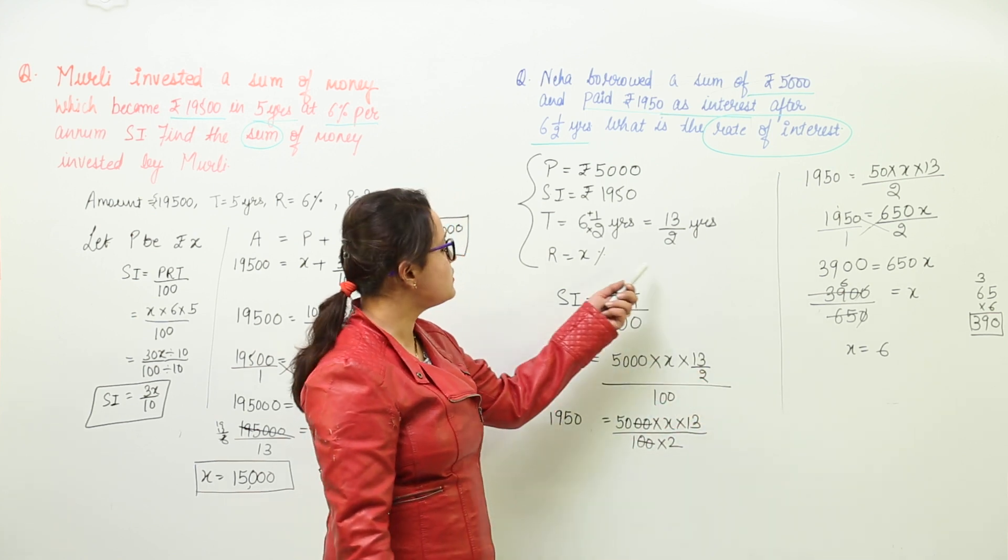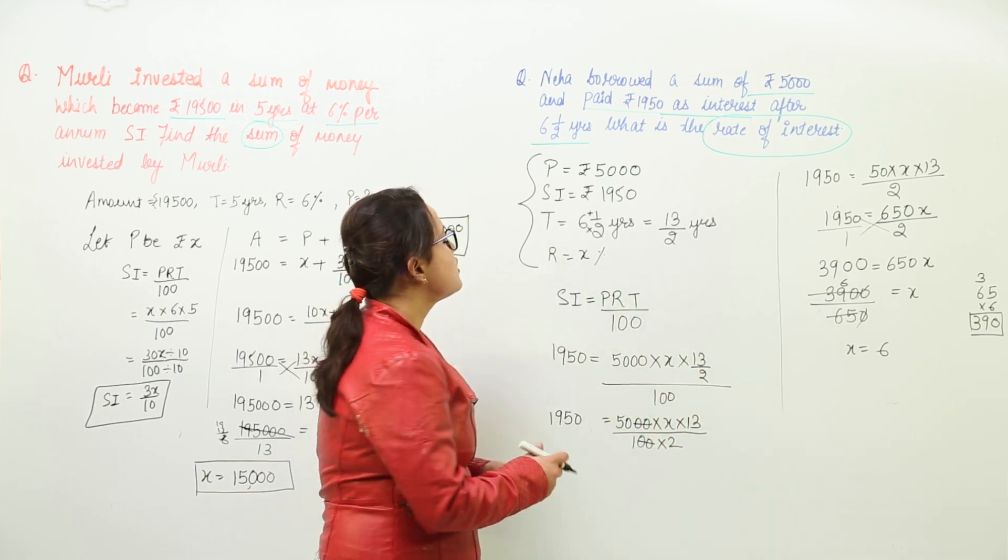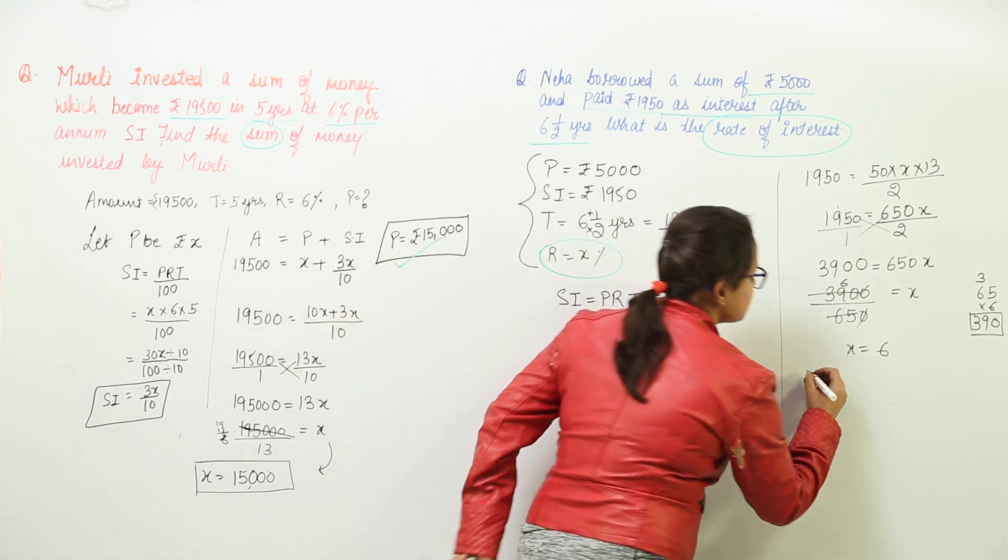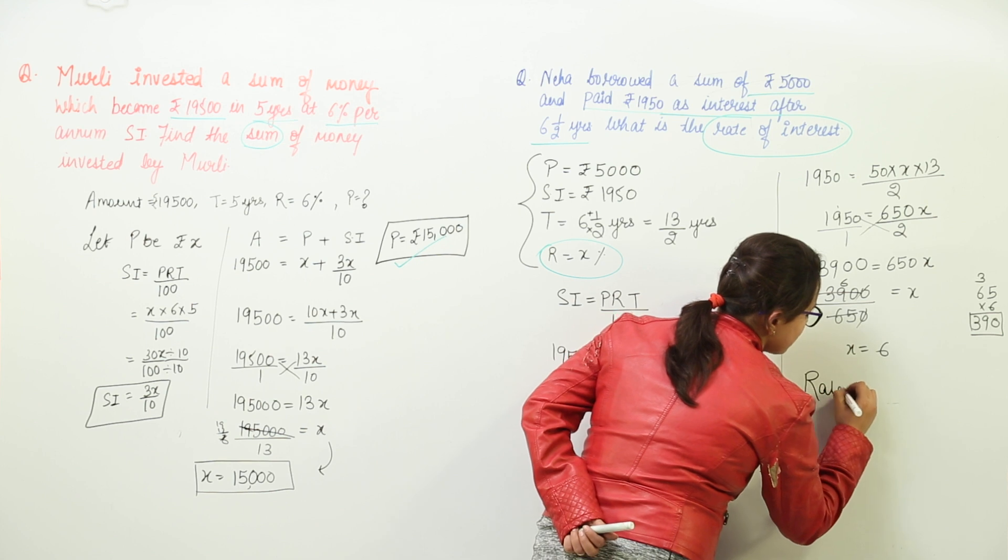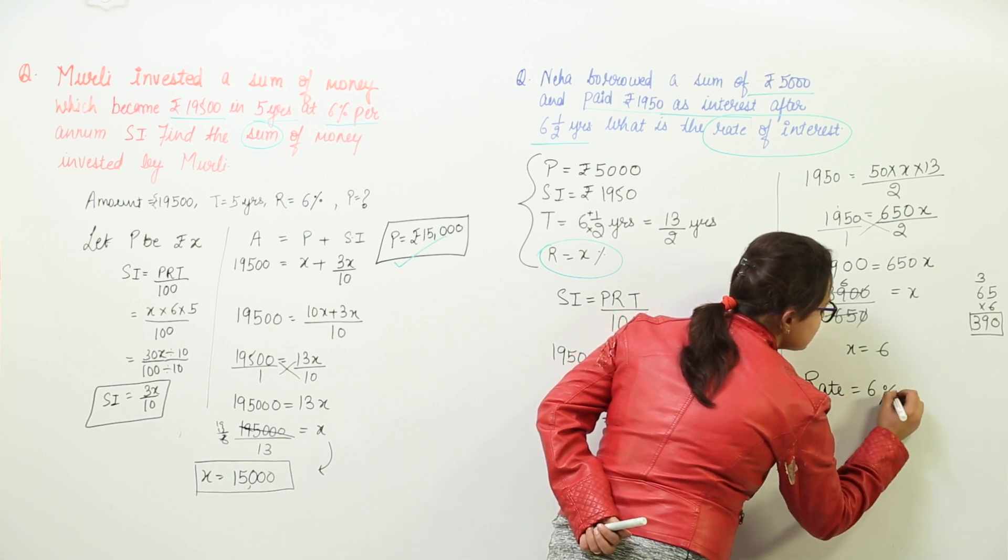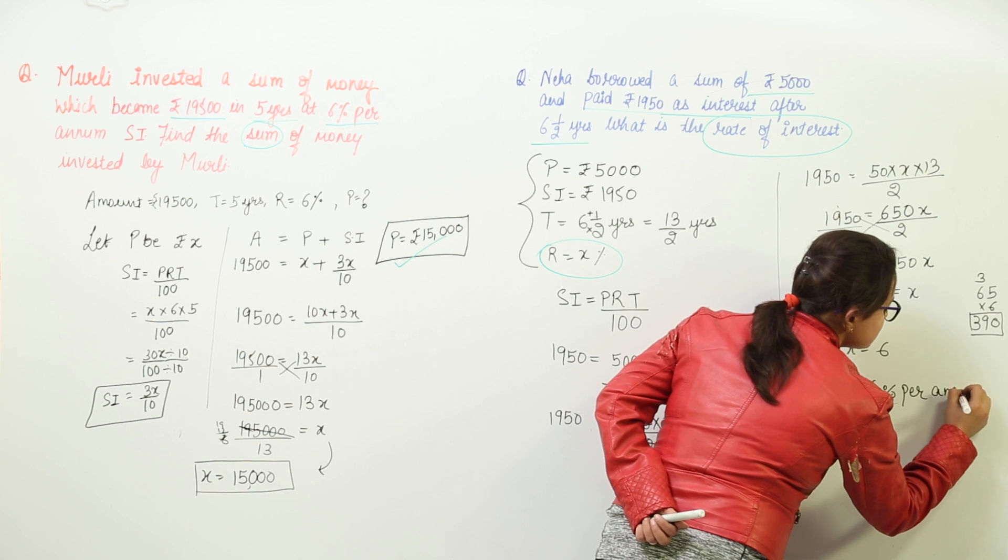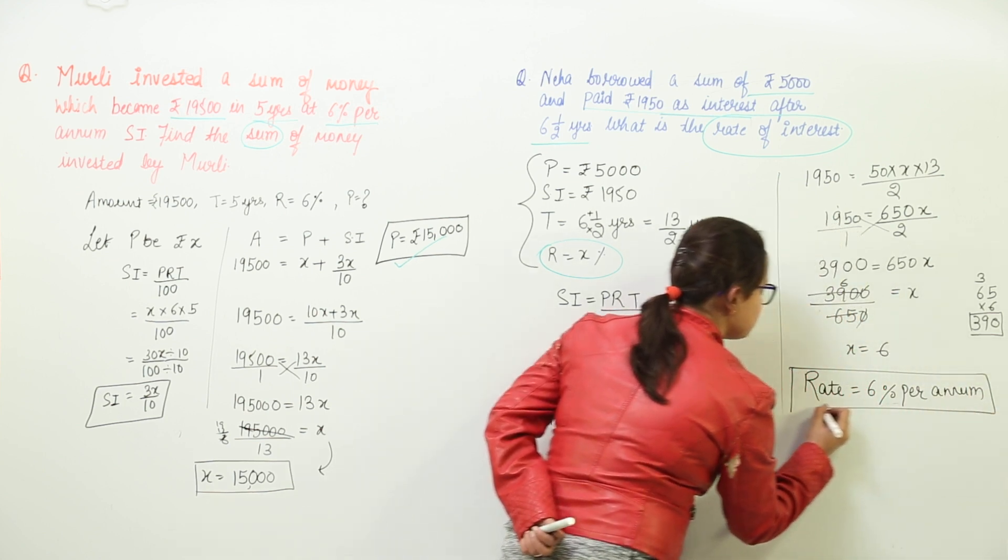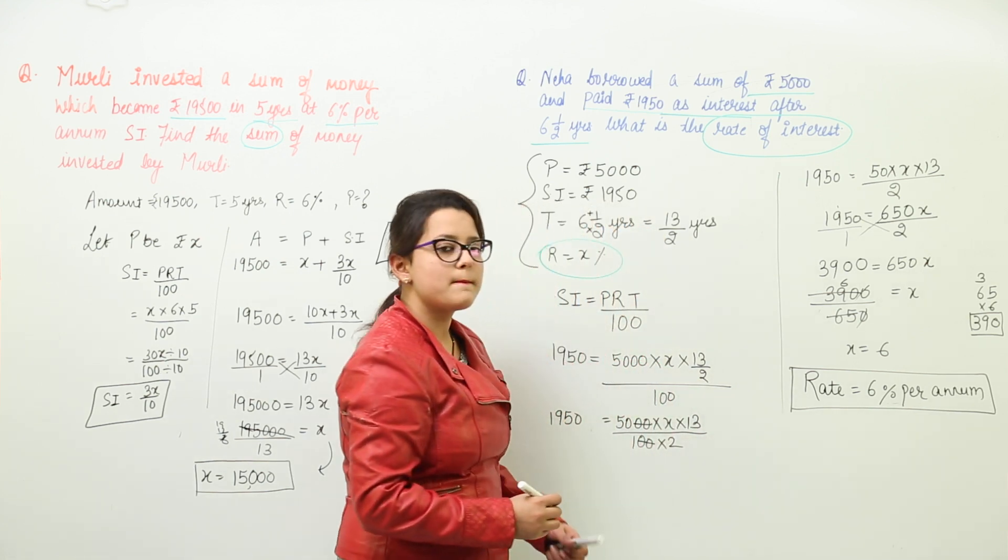We had assumed it to be the rate of interest so my rate of interest was assumed to be X therefore I get the rate of interest charged as 6 percent per annum because it was the value for X so I have got my answer for rate of interest as 6 percent per annum.